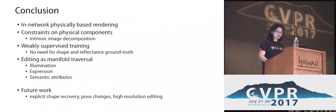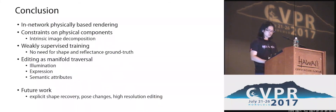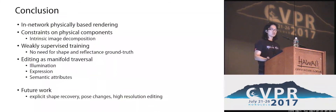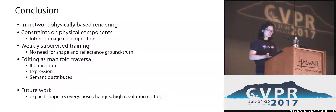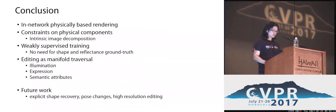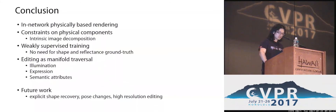In conclusion, we have shown how to incorporate the image formation process in a generative neural network, and introduced constraints on intrinsic images. These constraints enable weakly supervised training without requiring expensive ground-truth data for shading and reflectance. We can traverse the disentangled manifolds to perform image editing such as illumination manipulation, expression change, and modification of semantic attributes like age, facial hair, and glasses. Future work includes explicit shape recovery, enabling pose changes, and conducting editing in high-resolution images.